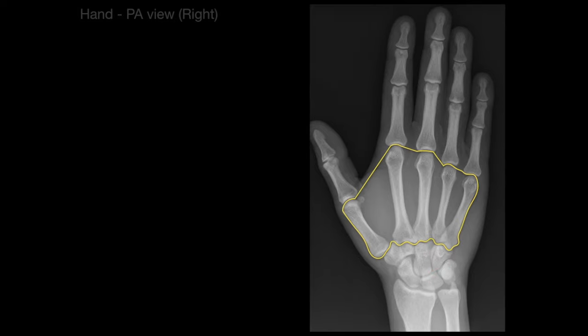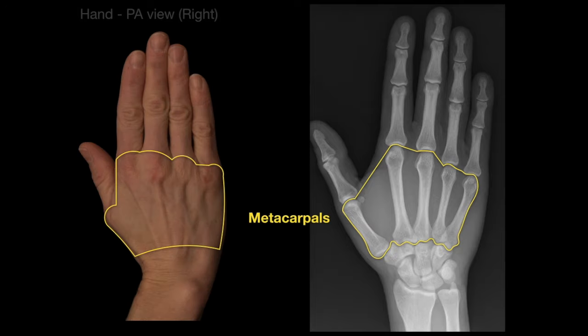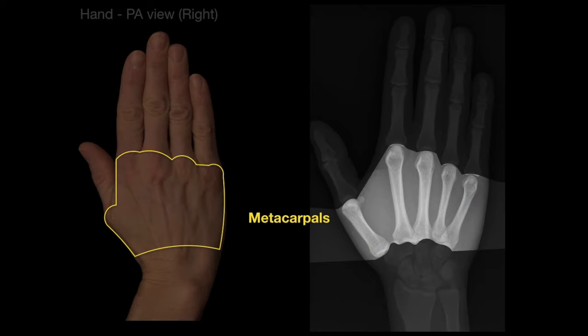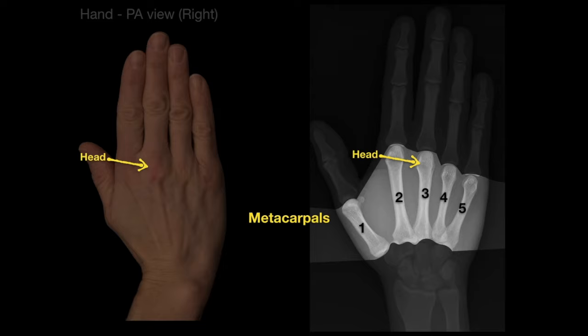There's a group of bones called the metacarpals in the back of the hand. The prefix 'meta' means after or beyond the carpals — so the metacarpals are the bones after the wrist. There are five of them, numbered one through five starting at the thumb. The distal end is the head of the metacarpal, forming the metacarpophalangeal joint, and the base is the end that articulates with the carpal bones.